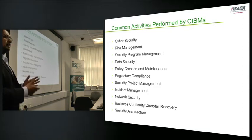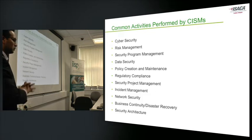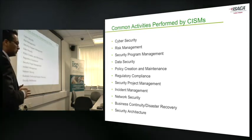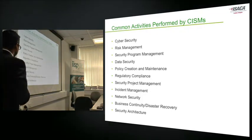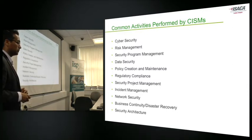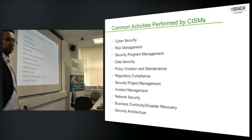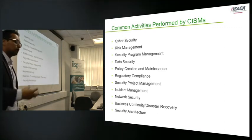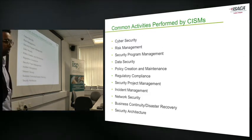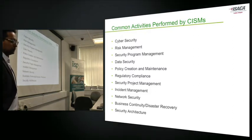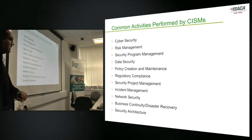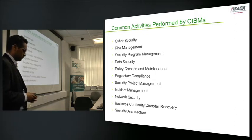Security program management — if there is an existing security program, how to play your role effectively. Data security — are you working with data custodians and data owners? What policies do we have, such as acceptable use and information classification policy? What regulations do we need to follow, such as EU data protection legislation and cookies consent in the UK? Are we working with the project team to embed security, taking the right steps for incident management, having right controls for network security, and having BCP and DRP processes? And working with architects to embed security — these are the normal activities expected from a CISM holder.